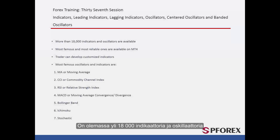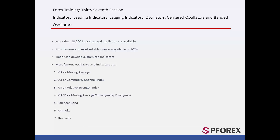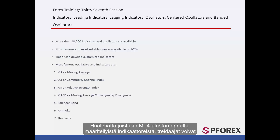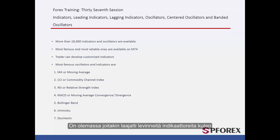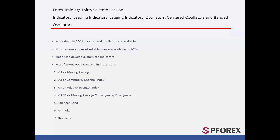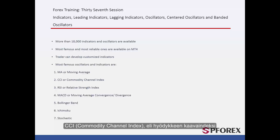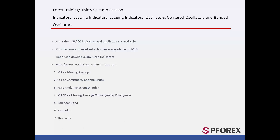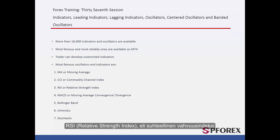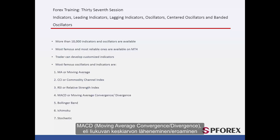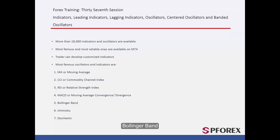There are more than 18,000 indicators and oscillators. Despite some predefined indicators available on the MetaTrader 4 platform, traders can still create customized indicators to develop better indicators for their trades. There are some widespread indicators as follows: MA or Moving Average, CCI or Commodity Channel Index, RSI or Relative Strength Index, MACD or Moving Average Convergence-Divergence, Bollinger Band, and Ichimoku. These are all accessible on both MetaTrader 4 and MetaTrader 5 platforms.